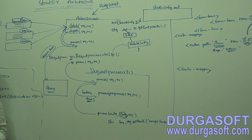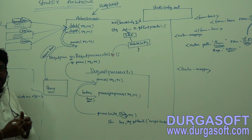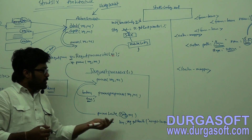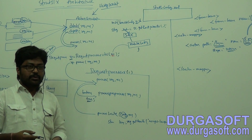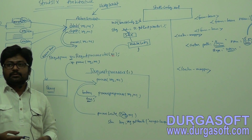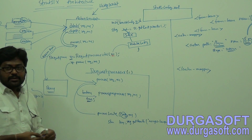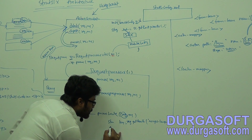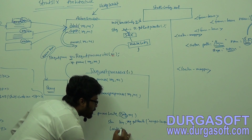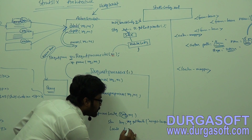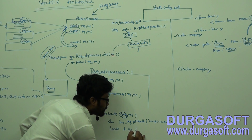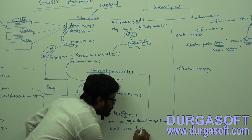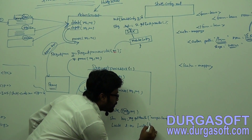The processLocale method will read your browser language. After reading your browser language, it will prepare one Locale object. You know the Java Locale class - it will create a Locale object: Locale l equal to new Locale of lang.